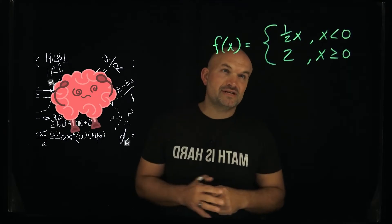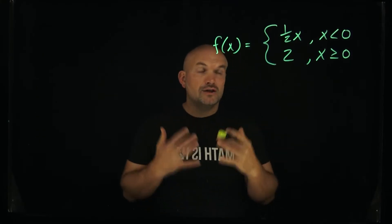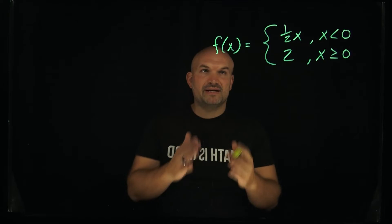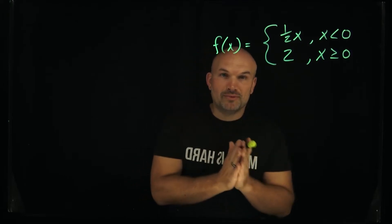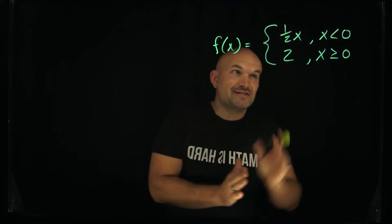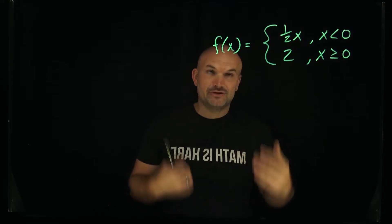Now piecewise functions can be very confusing when students are first learning how to graph them, and the reason is because you have not only one rule but two rules, and then you have constraints for when those rules are going to be true.